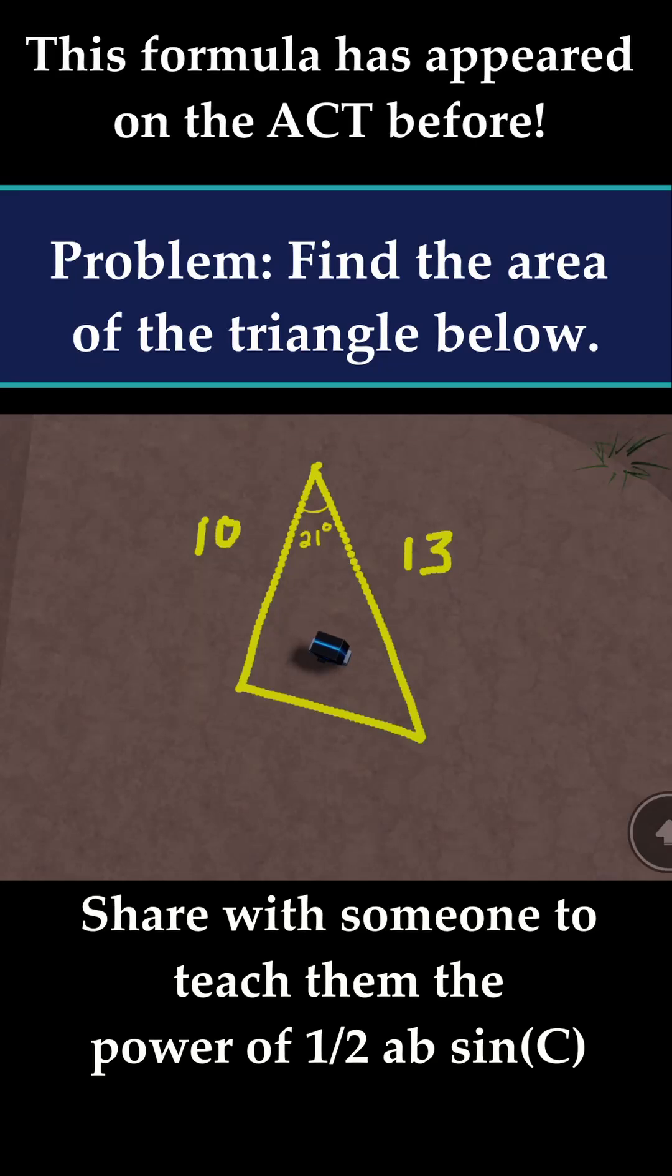In this problem, you have a triangle with side lengths of 10, 13, and an angle between them of 21 degrees. Let's recall the formula that will help us find the area of this triangle.